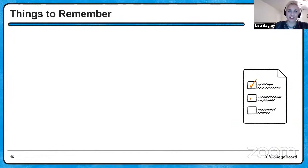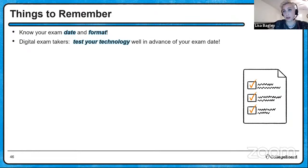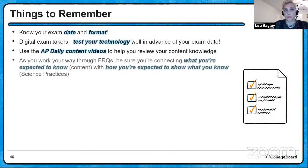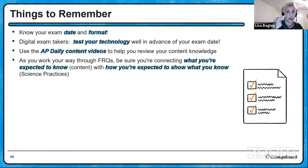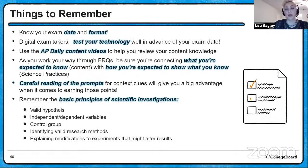Key takeaways: know your exam date and format; talk to your AP Environmental Science teacher and AP coordinator so you can backwards-plan for review. Digital exam takers should test their technology well in advance and practice with the digital testing app. Use your AP Daily content videos to review content knowledge. As you work through free response questions, connect your content knowledge with how you're expected to show it — the science practices. Read prompts carefully for context clues. Remember the basic principles of scientific investigations: valid hypotheses, independent and dependent variables, control group, identifying valid research methods, and explaining modifications to experiments that might alter results. Any of these are fair game on this year's test.